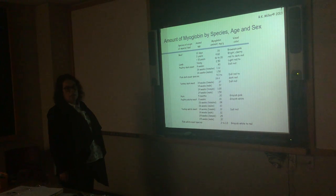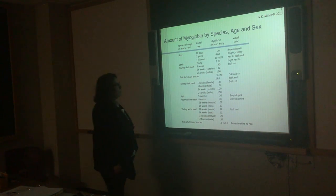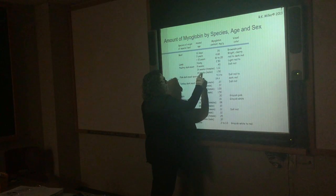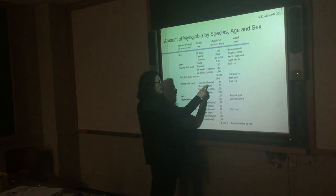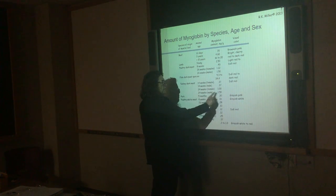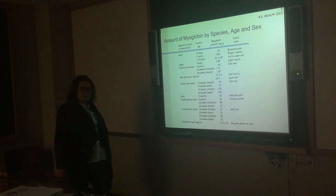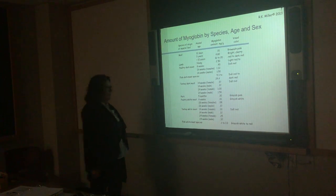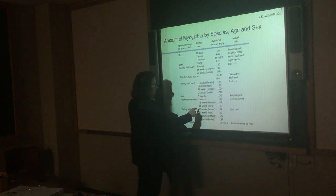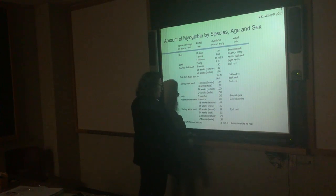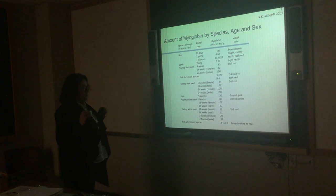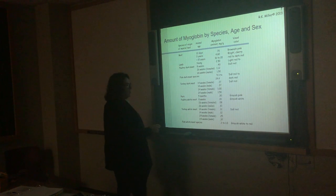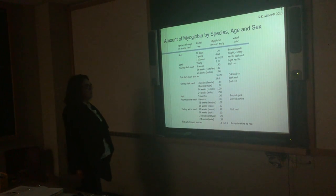Males have higher myoglobin than comparable-age females within a species. For poultry dark meat and turkey dark meat, males and females are the same early on, but once they hit puberty and males begin testosterone production and secondary sex characteristics, myoglobin goes up. In poultry and turkey white meat, the effect isn't as pronounced because there isn't as much myoglobin to begin with.